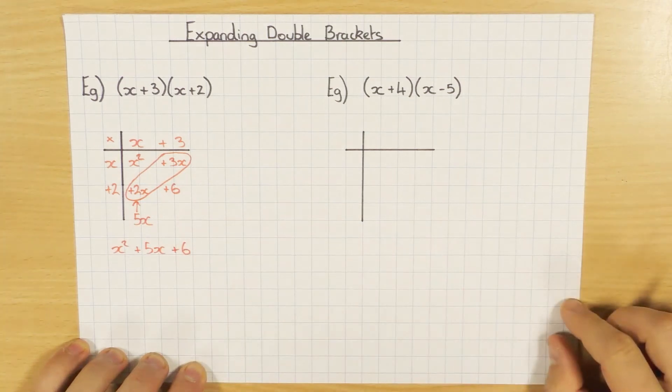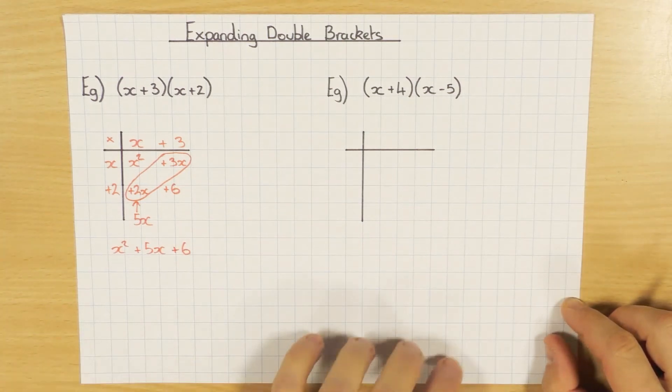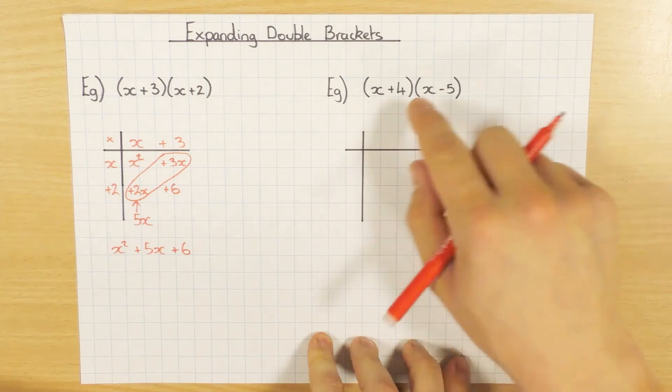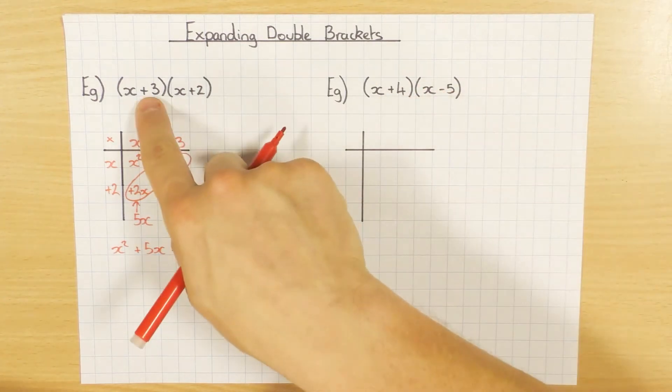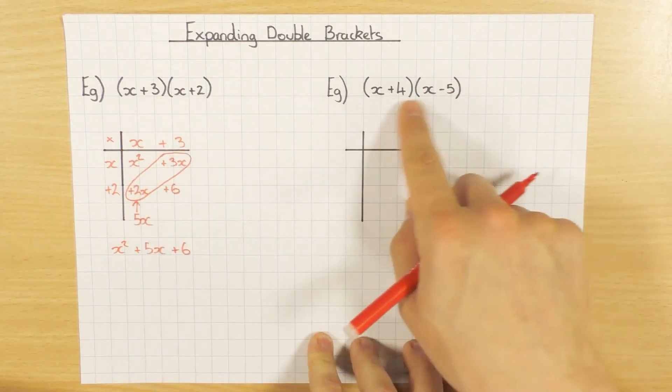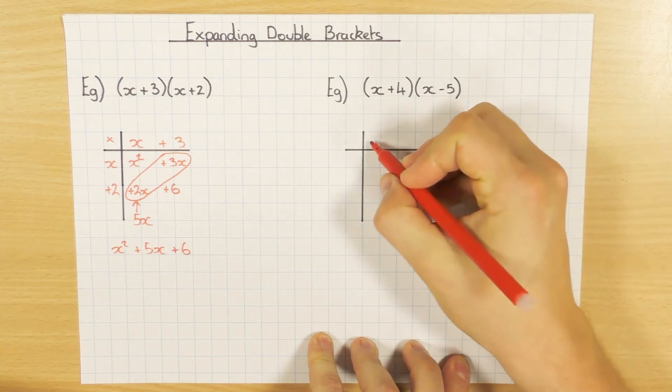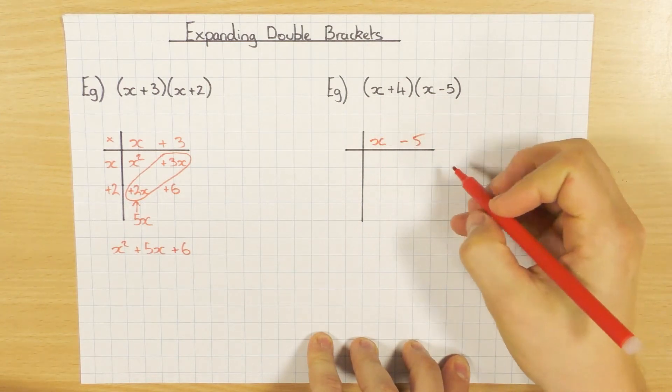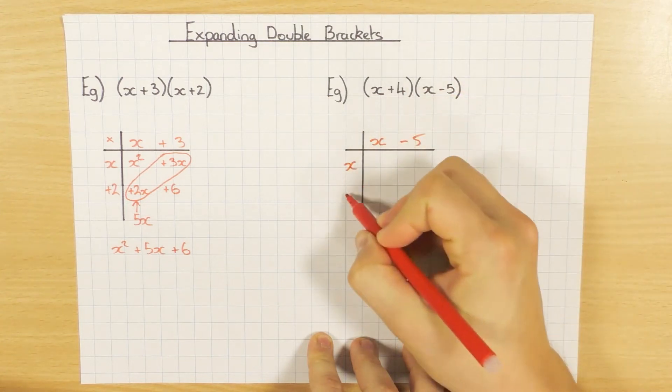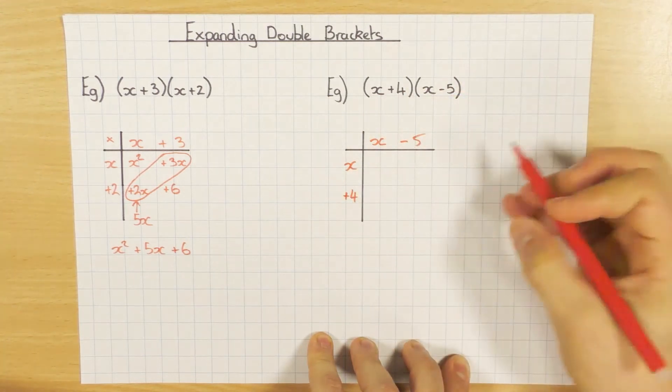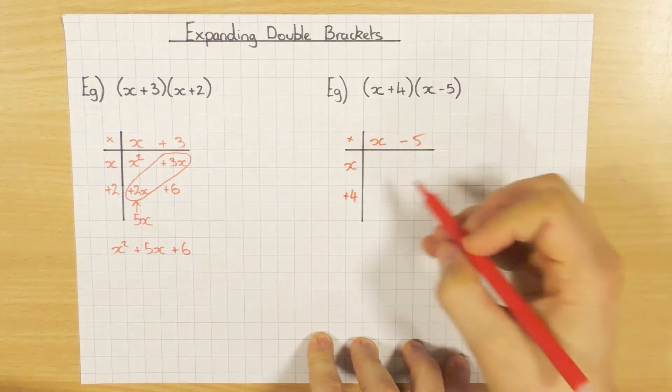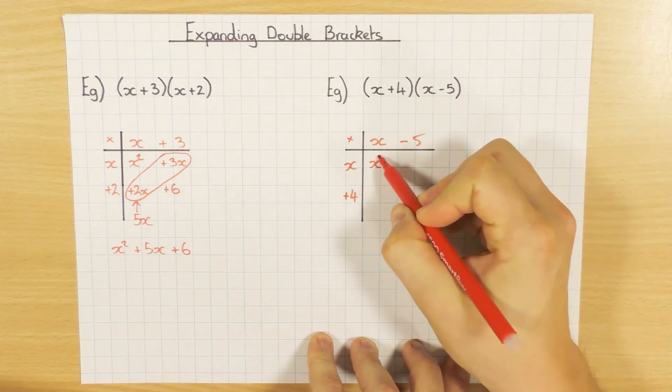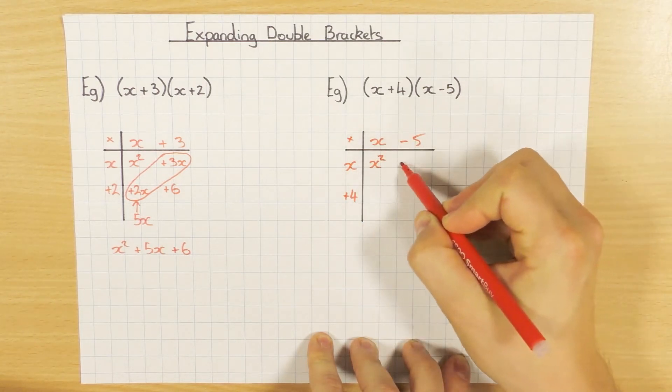So I have my x squared from there, I have my simplified 5x, and of course I have my number 6 there and we're done. Simple as that. Same thing for this one. So it doesn't matter which one you put at the top. That one over here I put x plus 3 at the top, but I could equally put the second one, which I'm going to do this time just to show it doesn't matter. So x minus 5 and x plus 4.